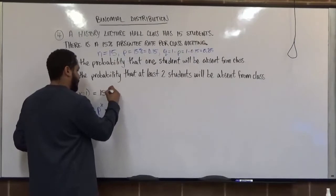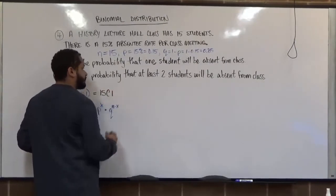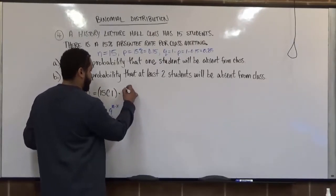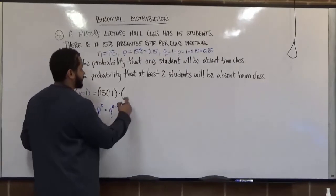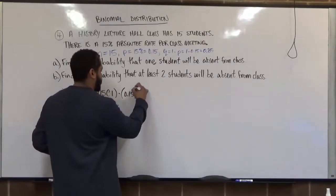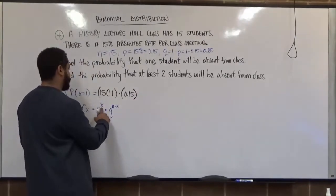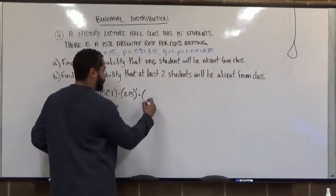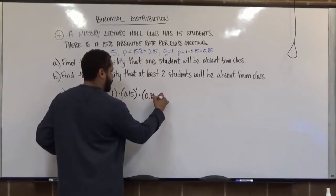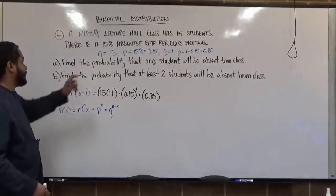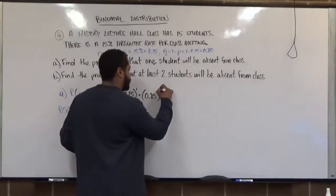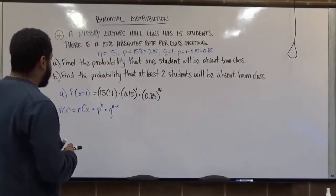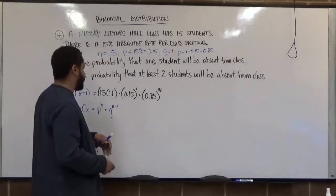In this case, X is 1, N is 15, P is 0.15, and Q is 0.85. So we set up: 15 combination 1, times 0.15 to the power of 1, times 0.85 to the power of N minus X. N is 15 and X is 1, so 15 minus 1 gives us 14. Now the next step is to run all of this on our calculators and simplify as much as we can.